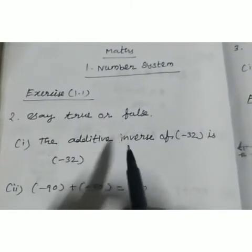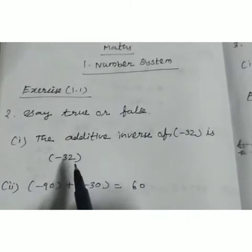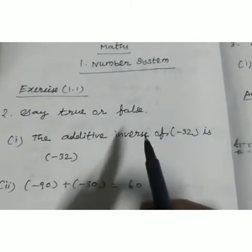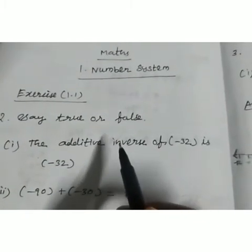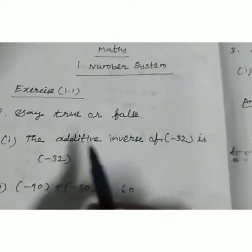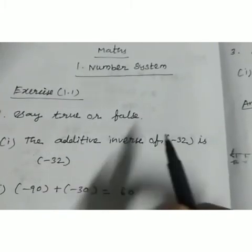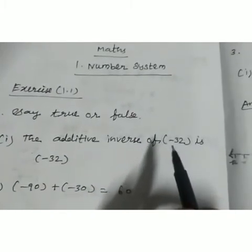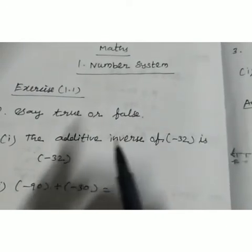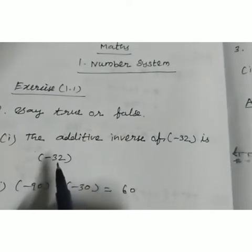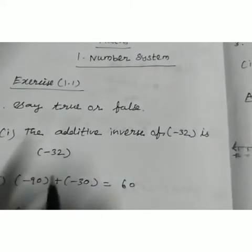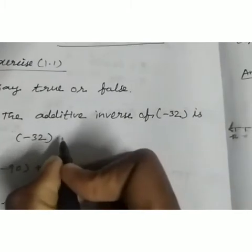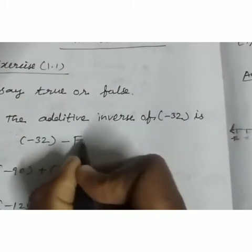The first question: the additive inverse of minus 32 is minus 32. Inverse means opposite. So the opposite of minus 32 is plus 32. But here it says minus 32. So this is wrong — the answer is false.